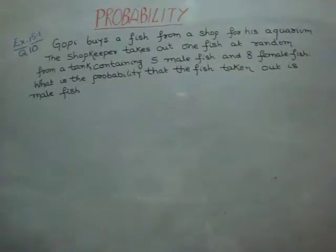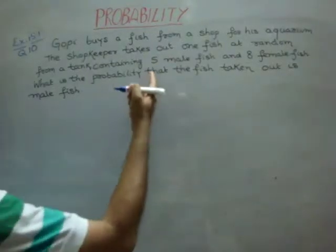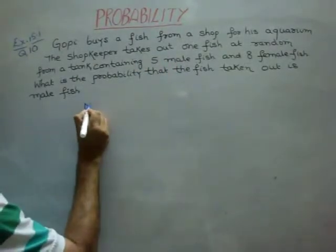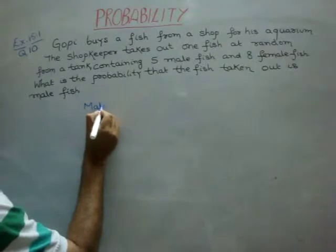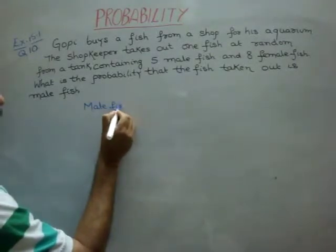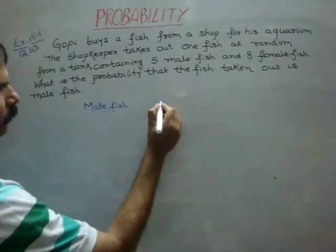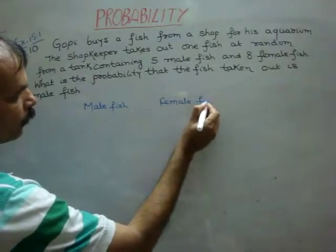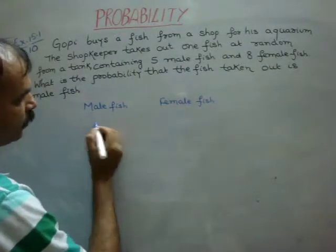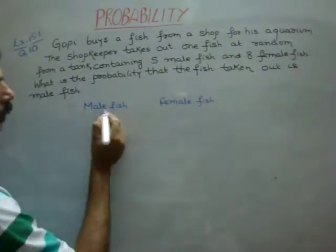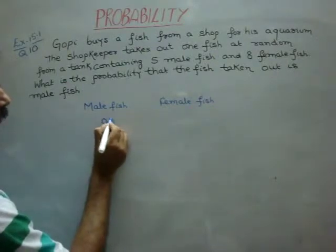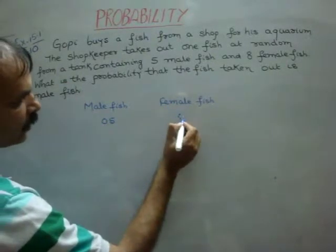In this question, it has said, which fish is? First, it is male fish. So what is the male fish? And what is the female fish? Okay, so now male fish is how many? 5, 0.5. And female is how many? 0.8.